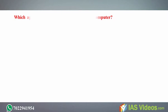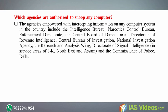Which agencies are authorized to snoop any computer? The agencies empowered with intercepting information on any computer system in the country include the Intelligence Bureau, Narcotics Control Bureau, Enforcement Directorate, the Central Board of Direct Taxes, Directorate of Revenue Intelligence, Central Bureau of Investigation, National Investigation Agency, the Research and Analysis Wing, and the Commissioner of Police, Delhi.